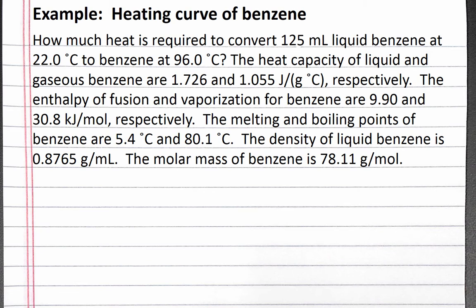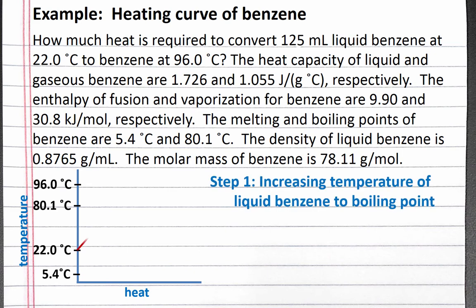We can start by mapping out the heating curve for the temperature change we're interested in. We're starting at 22 degrees Celsius, which is between the melting and boiling points of benzene, so we're starting with a liquid. Our first step is to increase the temperature of the benzene to its boiling point.